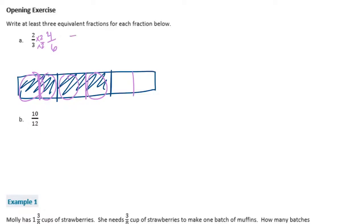If I want another equivalent fraction, I can multiply by three over three. So two times three is six, and three times three is nine — so six-ninths is an equivalent fraction. If I want another one, I can multiply them both by four. Two times four is eight, and three times four is twelve, so eight-twelfths is another equivalent fraction.